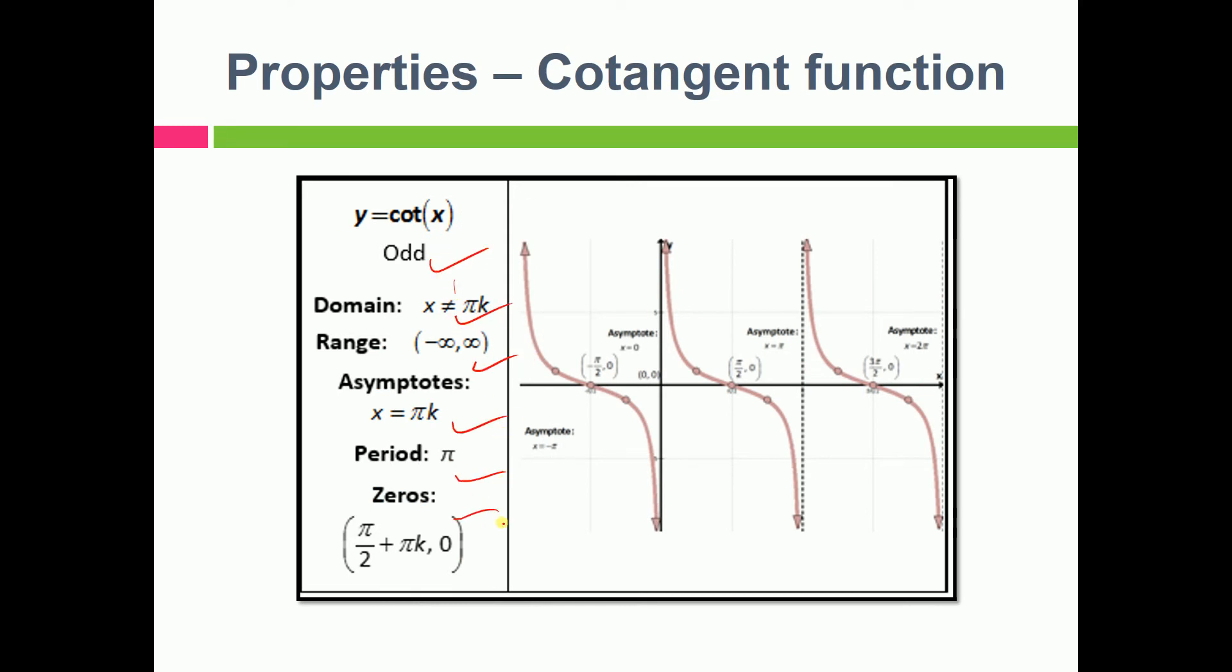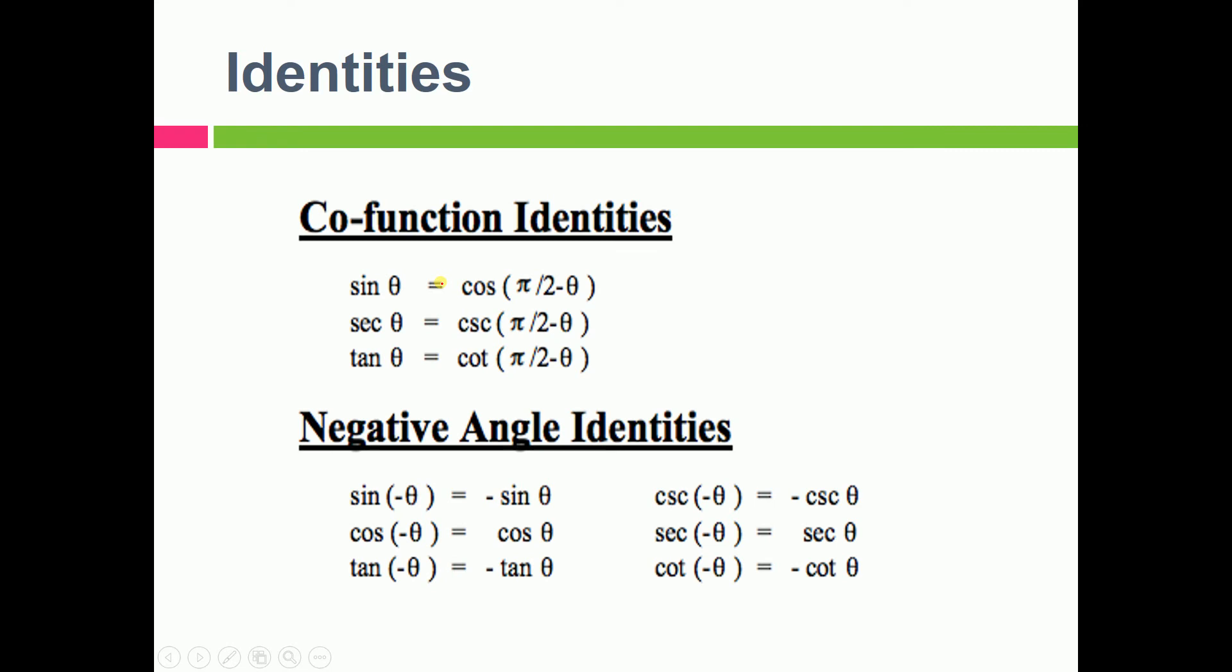Then we have some co-function identities. Yes, this is important in order to convert our one function to another trigonometric function. You should remember that cos(π/2 - θ), it's written basically in radians. If you want to write in degrees, so it will be cos(90° - θ), that will give you sine theta. Sine(90° - θ) is cos theta and so on, like this, all these derivations relations.